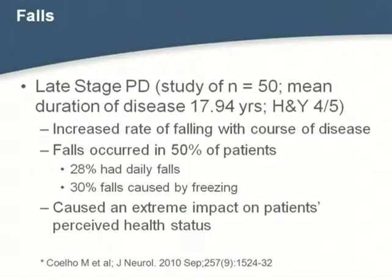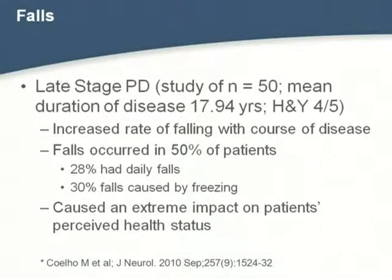In late-stage Parkinson's, falls are a huge deal. A study of 50 people at Hoehn & Yahr stages four and five with average disease duration of 18 years showed: the longer you have the disease, the higher the fall rate. Falls occurred in 50% of patients, 28% had daily falls, and 30% of falls were caused by freezing — a major factor for treatment strategies. Falls had an extreme impact on patients' perceived health status and caregiver strain.